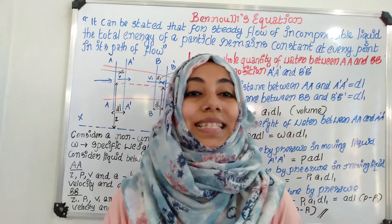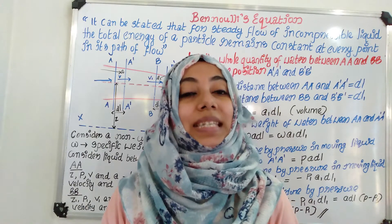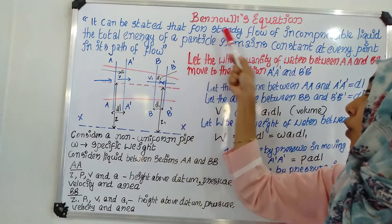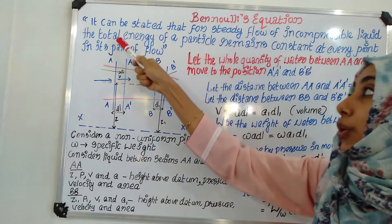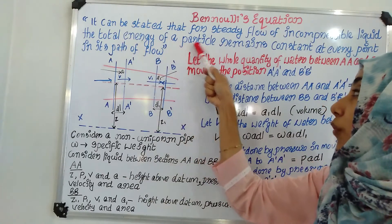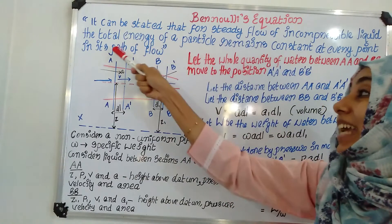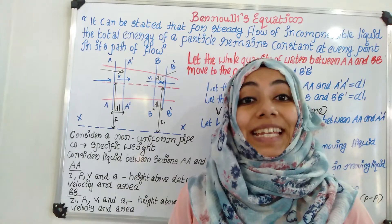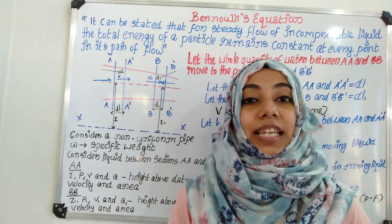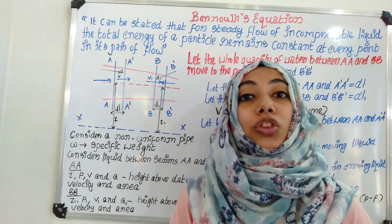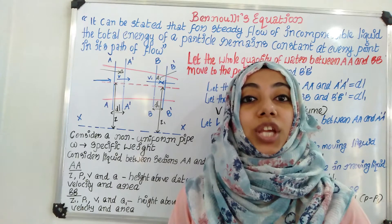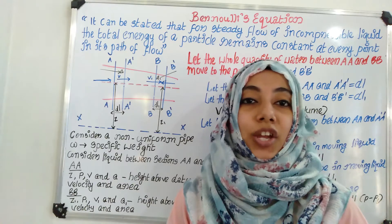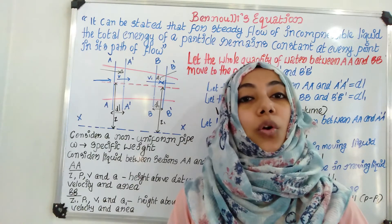What is Bernoulli's equation? What is the statement of Bernoulli's equation? It can be stated that for steady flow of incompressible liquid, the total energy of a particle remains constant at every point in its path of flow. In steady flow of an incompressible liquid, at any point in the path of flow, the total energy will be constant. That is Bernoulli's equation.